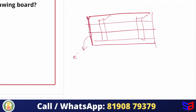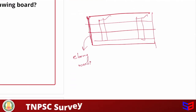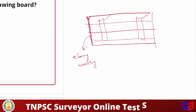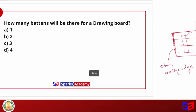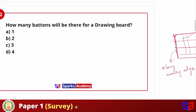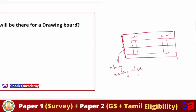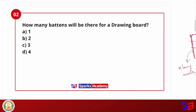On the edge, it is called the ebony working edge. The number of battens is 2, so the answer is 2.